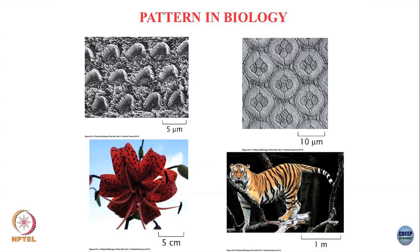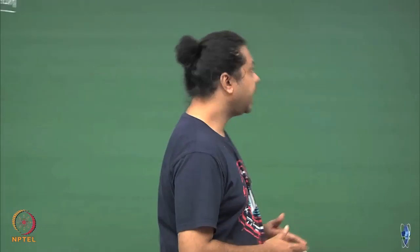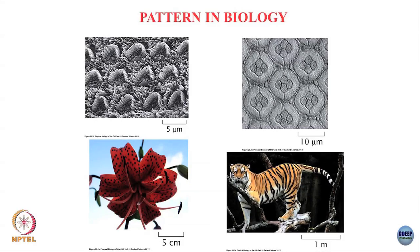This was a problem that originally Turing thought about a long time back in the 1940s and 50s. He said that given that generically nature forms these patterns across multiple length scales, can one come up with a mechanism which will explain the process by which different chemical constituents — be it pigments, be it proteins — can interact with each other and give rise to these sorts of patterns?